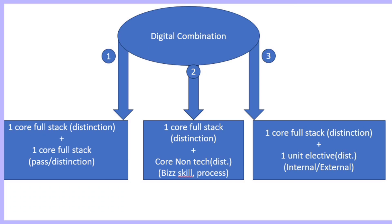Moving to the second combination: suppose you are finding the full stack courses very vast and you are not able to do both full stacks. In this case, you need one full stack with distinction — and note that one core full stack with distinction is now mandatory in every combination, since they have removed core programming.